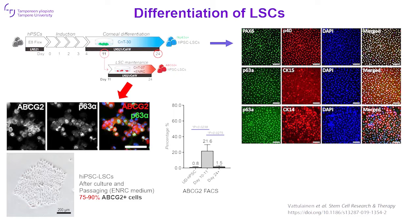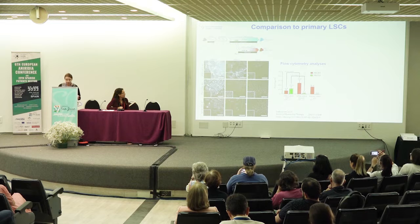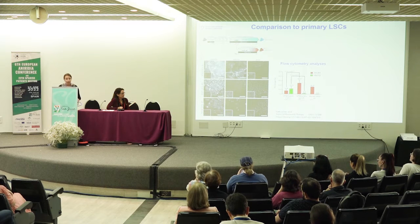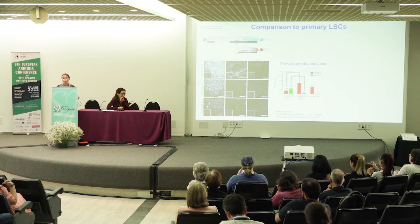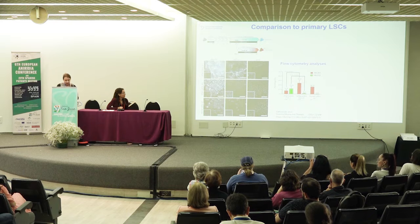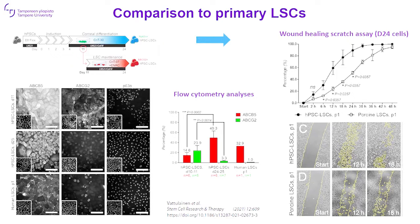Interestingly, there is also an additional limbal stem cell marker, ABCG5, which is currently used in clinical trials. It is demonstrating prior limbal stem cells. We wanted to know how this marker behaves in our differentiation protocol. We learned that it follows pretty much the PAX6 levels in our culture. Around day 10 to 11 we have these ABCG2-positive cells, and some of the cells are already expressing the ABCG5 marker as well. Then as cells use the ABCG2 marker and further differentiate, there is increased expression of ABCG5 marker, and at the same time we are starting to have entries for the PAX6-positive limbal stem cell-like cells as well.